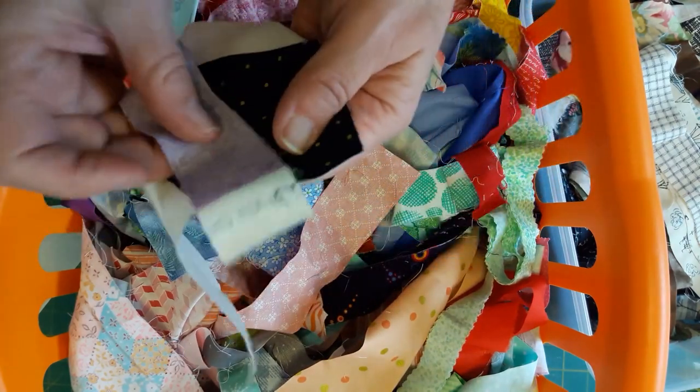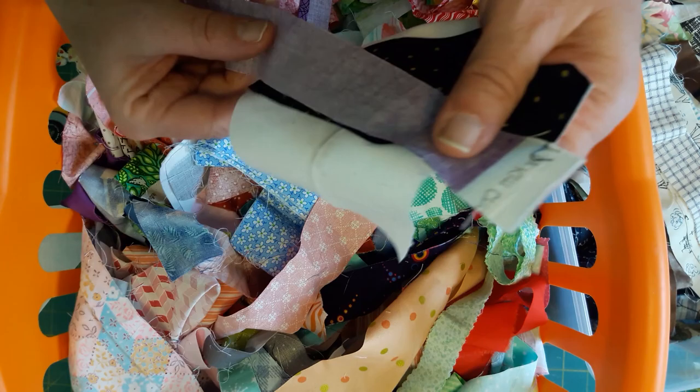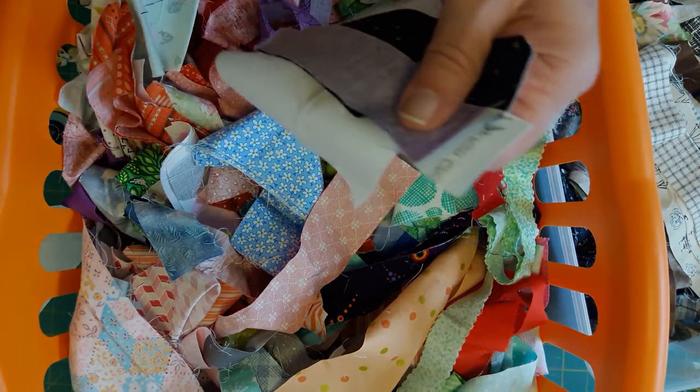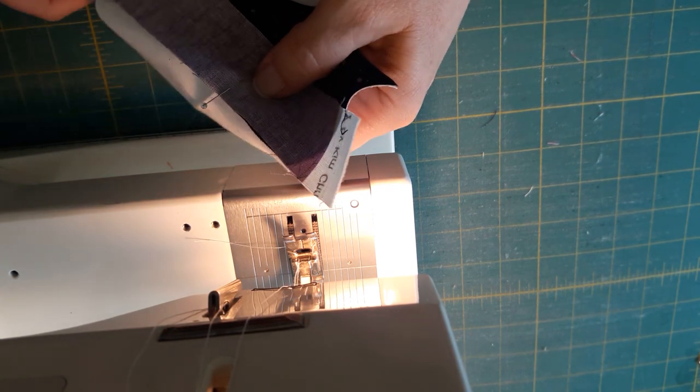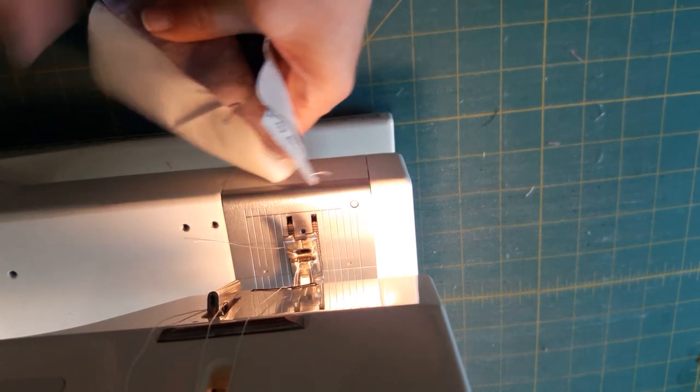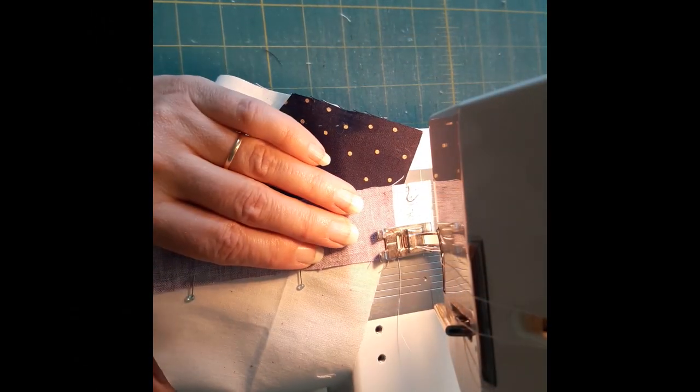And we're going to line that up along the edge of our kite. I'm going to pin that strip in place so it doesn't wiggle. That's probably a good idea. I don't always do it. So then we're just going to sew that strip on.